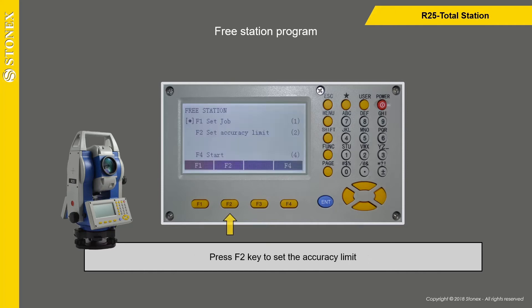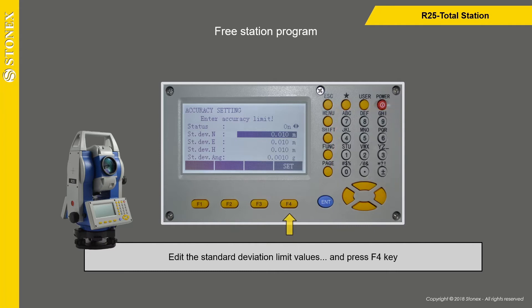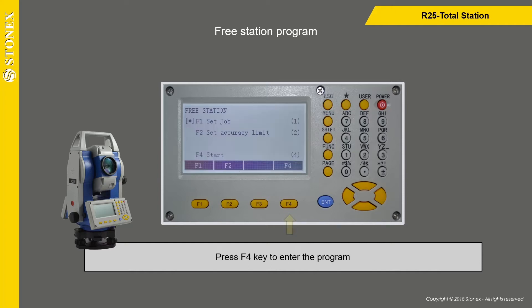Press F2 key to set the accuracy limit. Edit the standard deviation limit values and press F4 key to confirm. Then press F4 key again to enter the program.